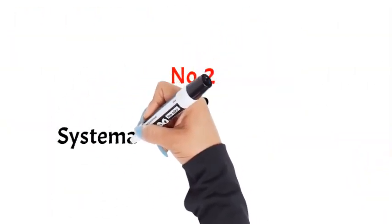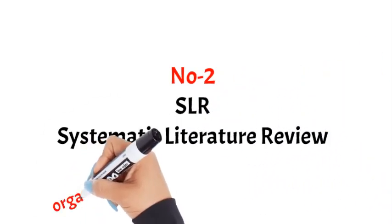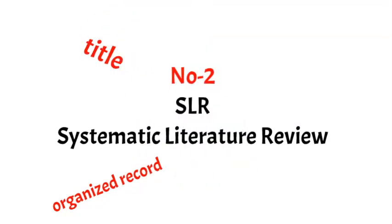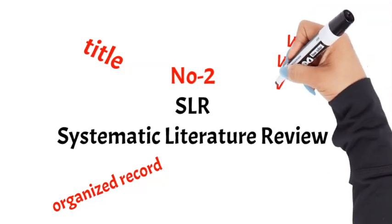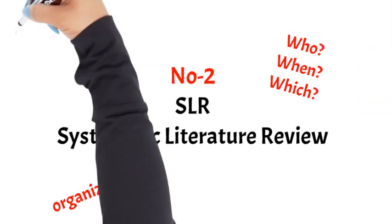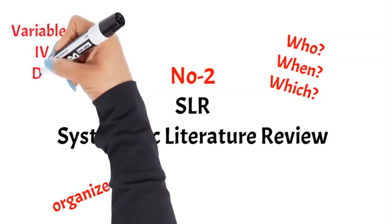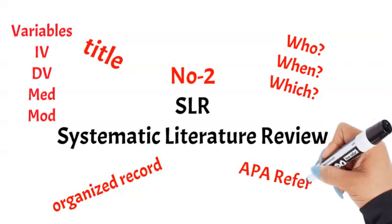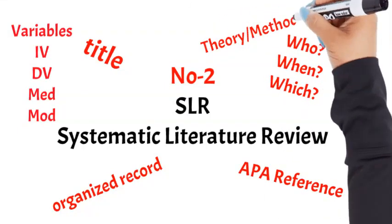Number two: SLR — what is it? Systematic Literature Review. Whatever you are reading, for instance, note the title, who is the writer, and when it was written, which journal it is published in, regarding your variables — your independent variable, dependent variable, your mediator, the moderator that you are studying. Record all of that, and the APA referencing, which is very important to keep.